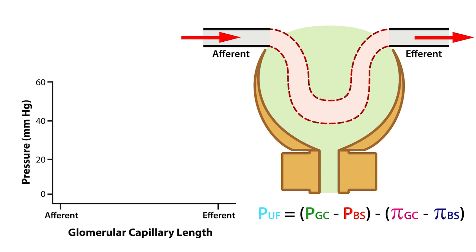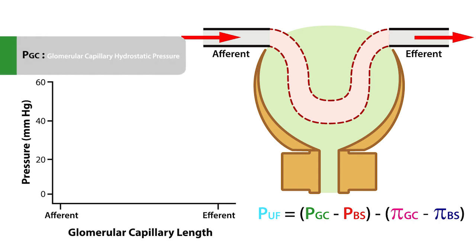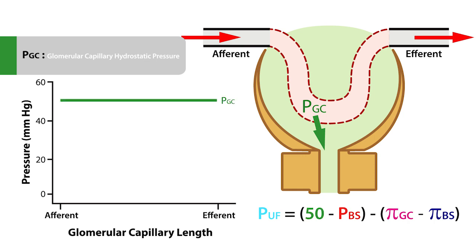The largest force involved in the formation of the ultrafiltrate is referred to as the glomerular capillary hydrostatic pressure, abbreviated as PGC. It is responsible for driving the ultrafiltrate from the glomerular capillary into the Bowman space. It is typically uniform at 50 mmHg across the entire length of the glomerular capillary. Changes in afferent or efferent arterial tone have the greatest influence over glomerular capillary hydrostatic pressure.